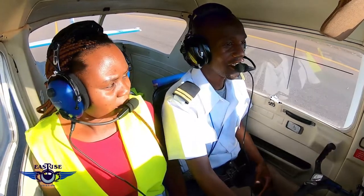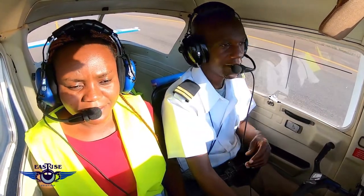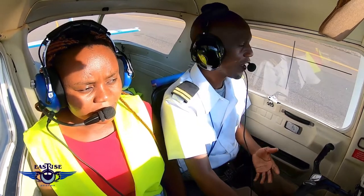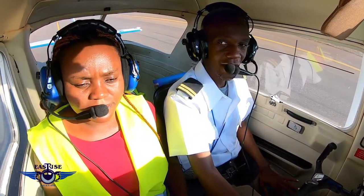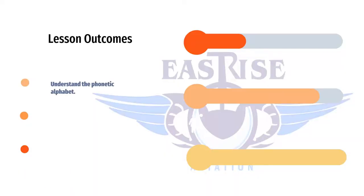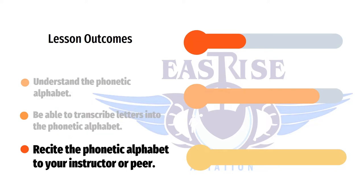As a supplement to the East Rice Ground School Lecture, here is the transcription of the International Radio-Telephony Spelling Alphabet, commonly called the ICAO Phonetic Alphabet or ICAO Spelling Alphabet. Here are our lesson outcomes: Understand the Phonetic Alphabet. Be able to transcribe letters into the phonetic alphabet. Recite the phonetic alphabet to your instructor or peer. Let's get started.